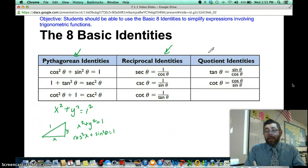These are called quotient identities, or sometimes ratio identities, because they're the ratio of two things. Tangent theta is sine over cosine. Cotangent is cosine over sine, and you've seen those before.